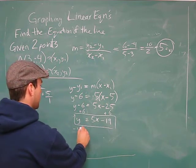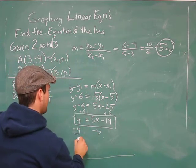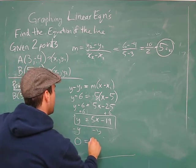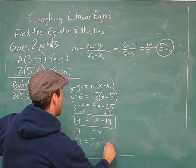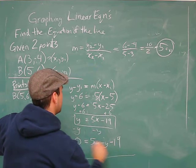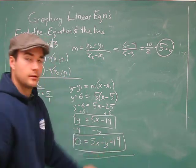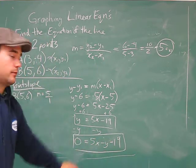Well, I can just subtract y from both sides, and get 0 on this side equals 5x minus y minus 19. No fractions? It's good to go. That is standard format.